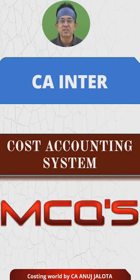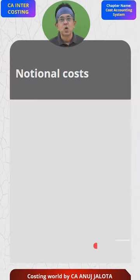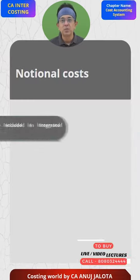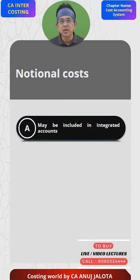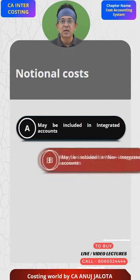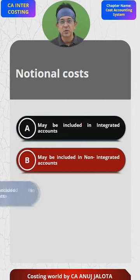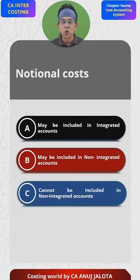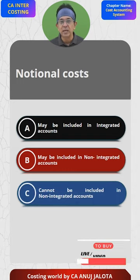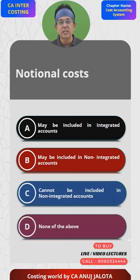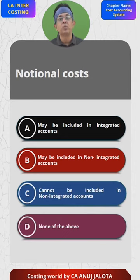Chapter 7, cost accounting system. The question is: notional cost may be included in — A) integrated accounts, B) non-integrated accounts, C) cannot be included in non-integrated accounts, and D) none of the above. What do you mean by notional cost?